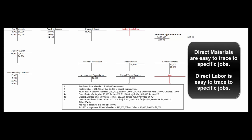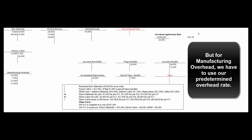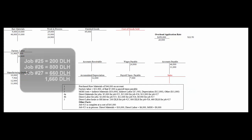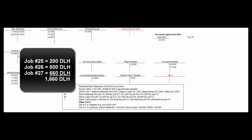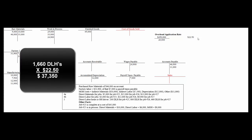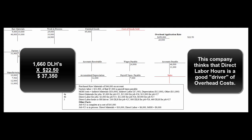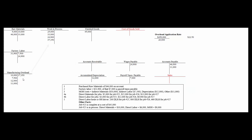For materials we can talk to Ralph; for labor we can look at time cards. But for manufacturing overhead we have to use our overhead application rate. Total direct labor hours for the month are 1,660. We multiply that times $22.50 — the company chose direct labor hours as the driver, though we could have used direct labor costs, machine hours, or kilowatts of electricity. For 1,660 direct labor hours we credit manufacturing overhead for $37,350 and debit work in process for $37,350.